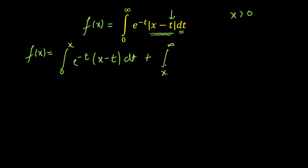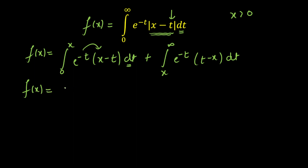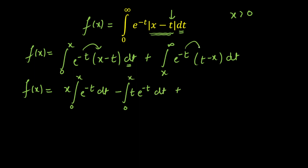The next integral will be from x to infinity, and since t is varying from x to infinity, mod of (x minus t) opens as (t minus x) because this will be positive. So f(x) equals: integration from 0 to x of e^(-t) times (x minus t) dt, plus integration from x to infinity of e^(-t) times (t minus x) dt. Taking x outside the first integral (since we integrate with respect to t), we get: x times integral from 0 to x of e^(-t) dt, minus integral from 0 to x of t·e^(-t) dt, plus integral from x to infinity of t·e^(-t) dt, minus x times integral from x to infinity of e^(-t) dt.